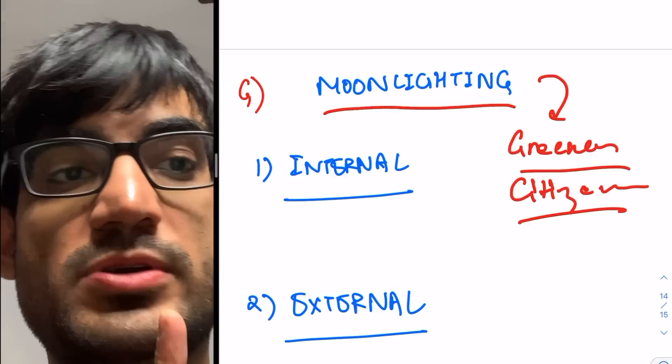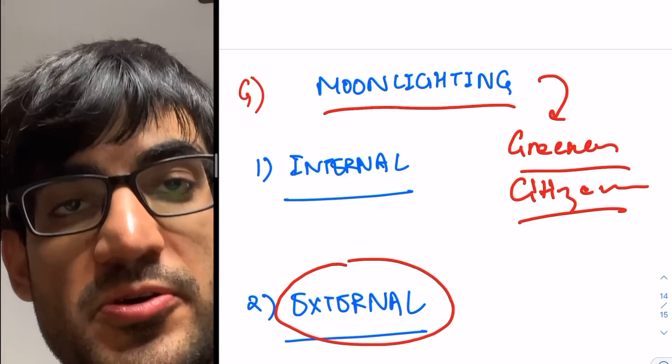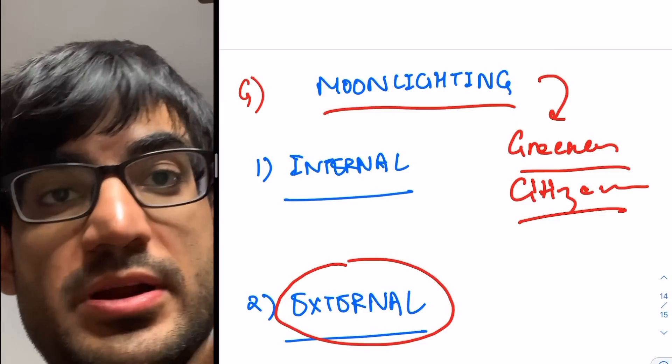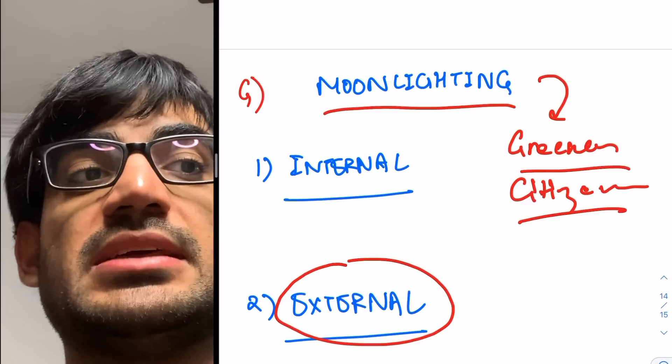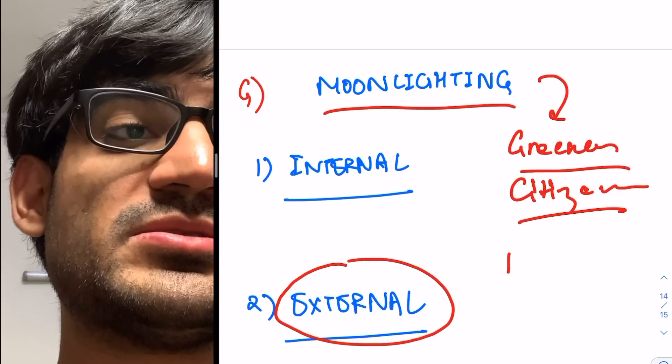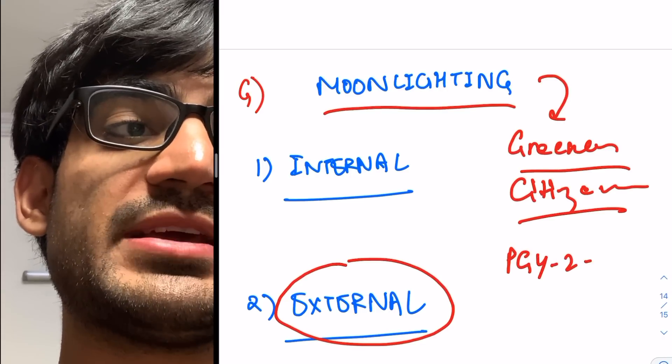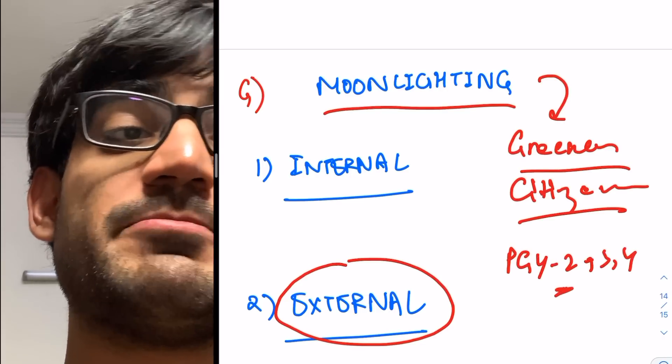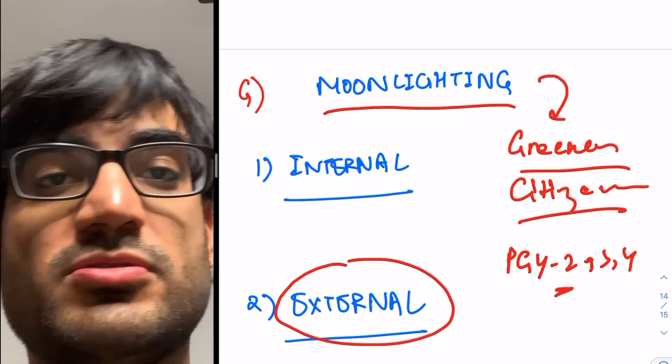Most of moonlighting happens externally. So you go out of your hospital to work in certain places and make money there. So you can do this. And this happens mostly after PGY-1. So you can start this in PGY-2, PGY-3, PGY-4. You can start in PGY-2 and then you can continue.